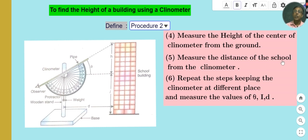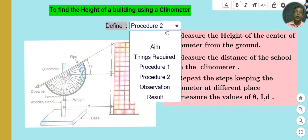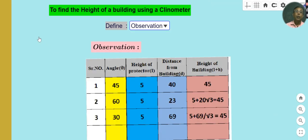Measure the distance of the school building from the clinometer — that distance is called d. Repeat the steps keeping the clinometer at different places and measure the values of theta, l, and d: the angle of elevation, the height of the center of the clinometer from the ground, and the distance from the clinometer to the school building.